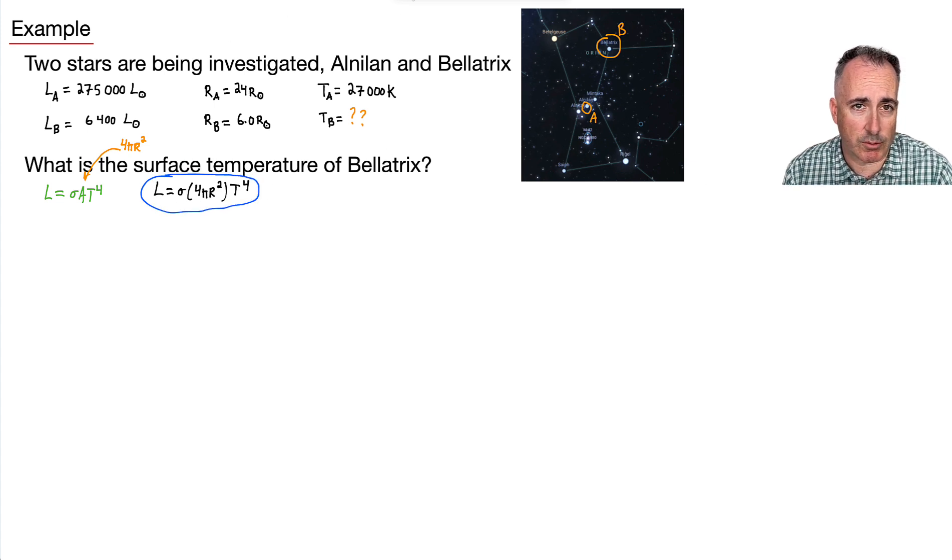So then what can I do? Well, I can write it for B then. Of course, I'm looking for B. So I'll say LB, luminosity of star B, can be equal to sigma times 4 times pi times RB. Do we know the radius?